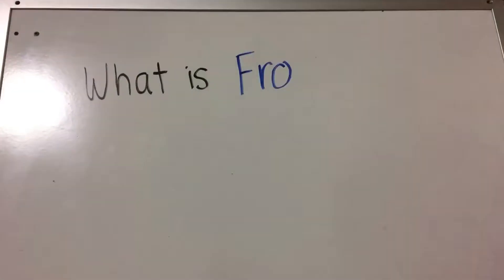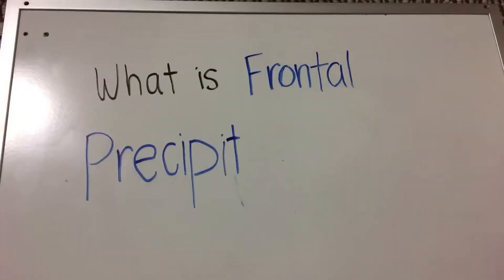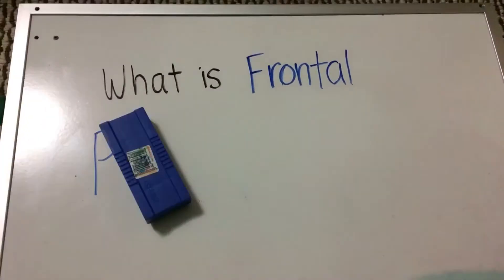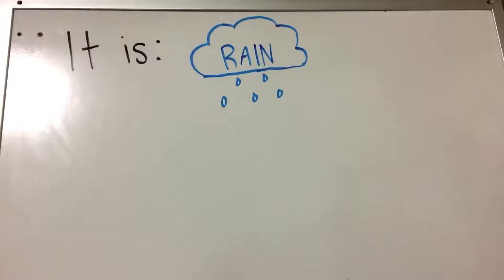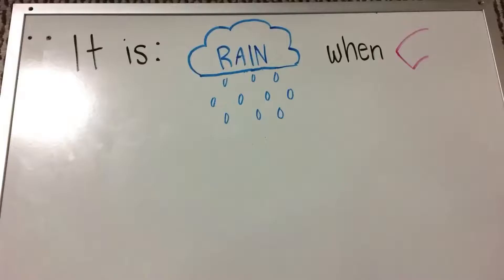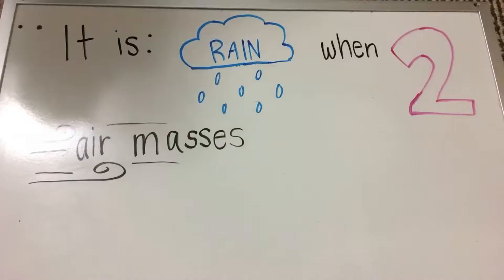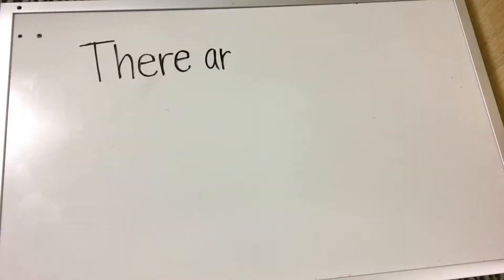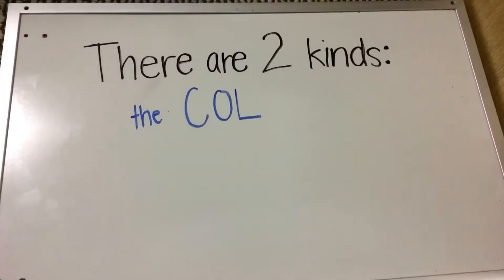So, what is frontal precipitation anyway? Isn't it just another word for precipitation? Well, it's more exciting than that. It's rain when two air masses meet. There are two kinds: the cold front and the warm front.